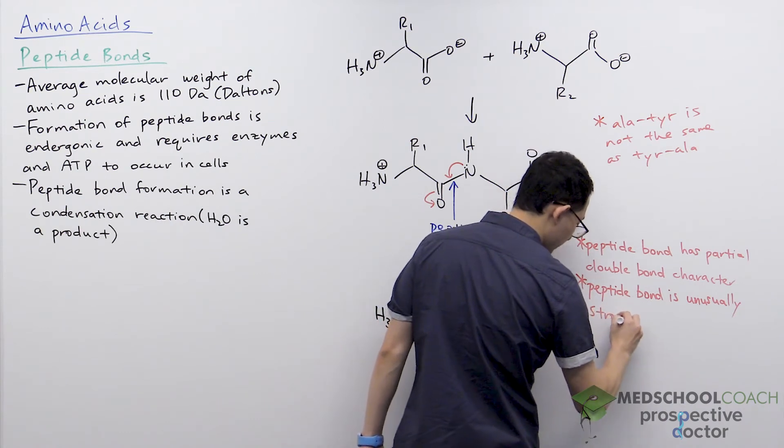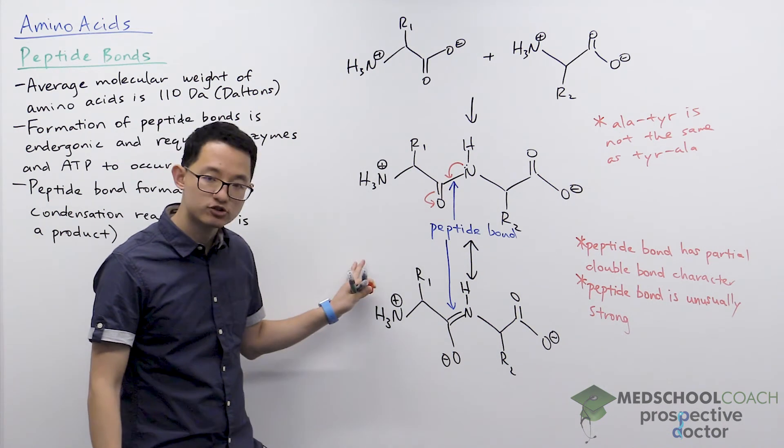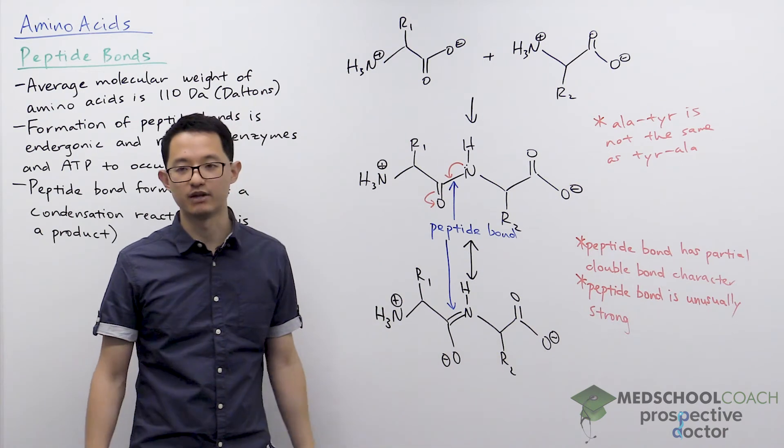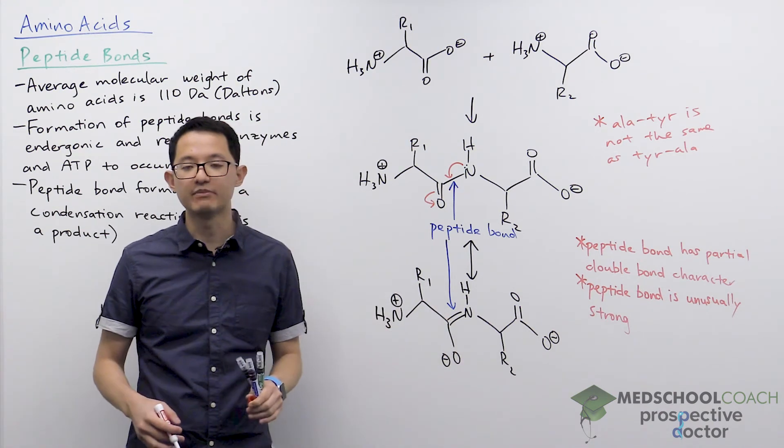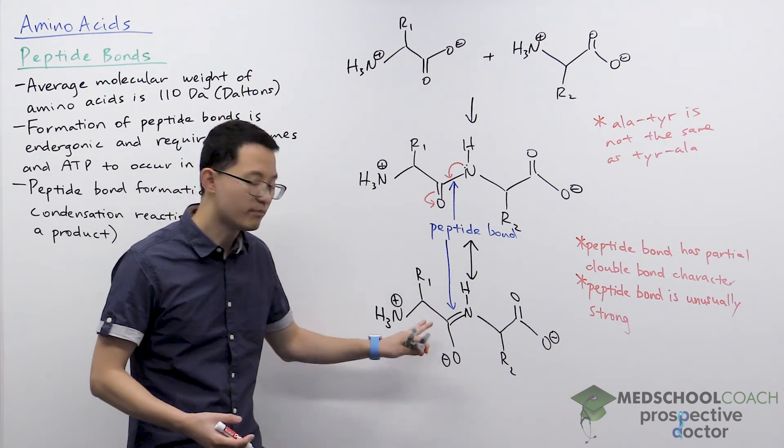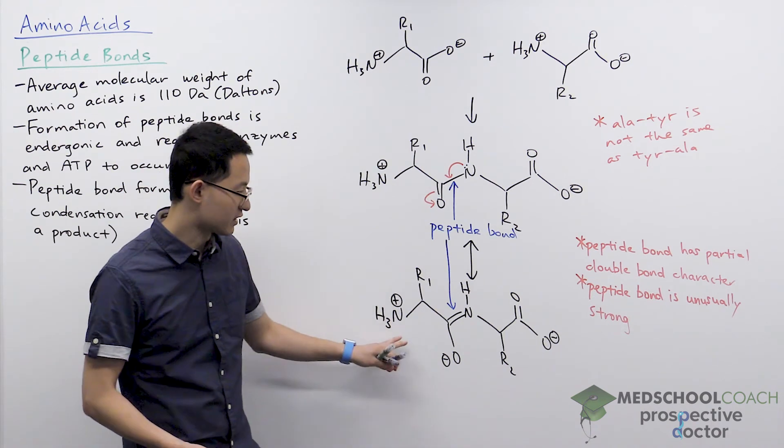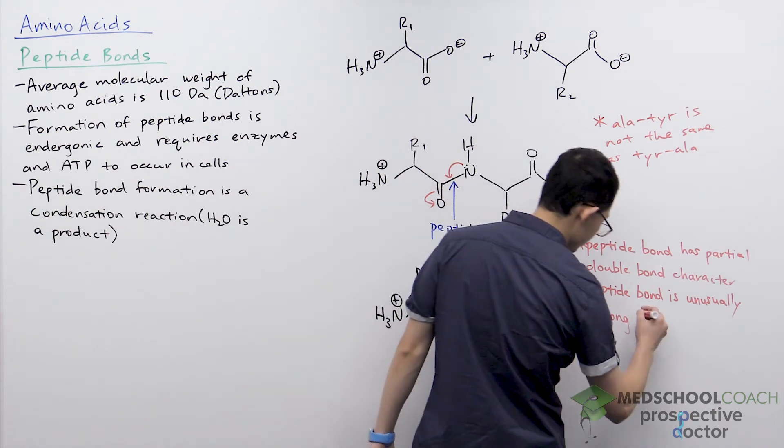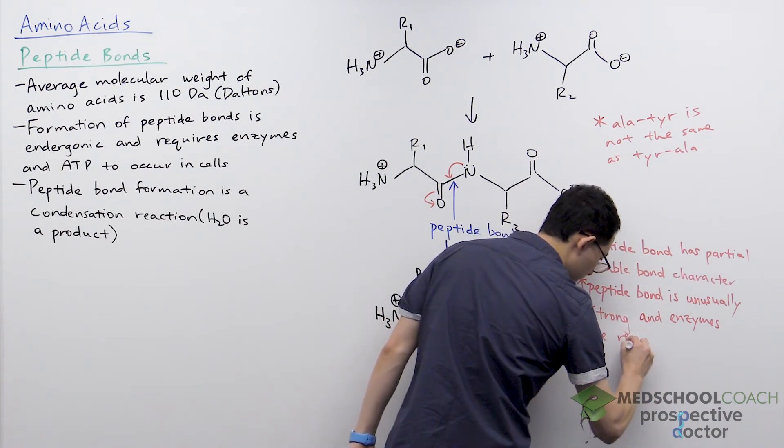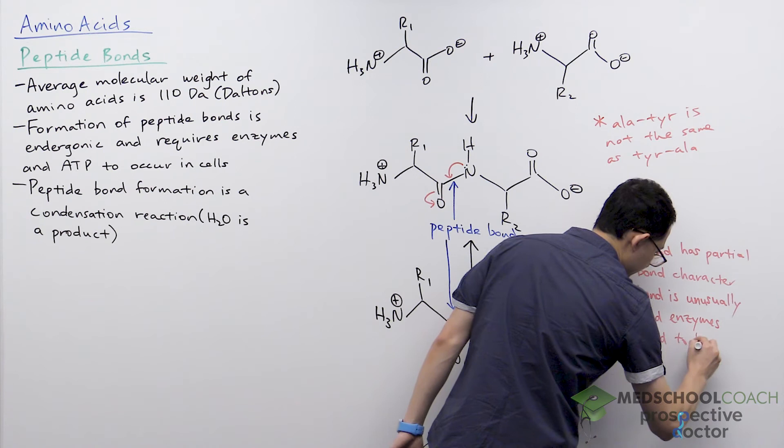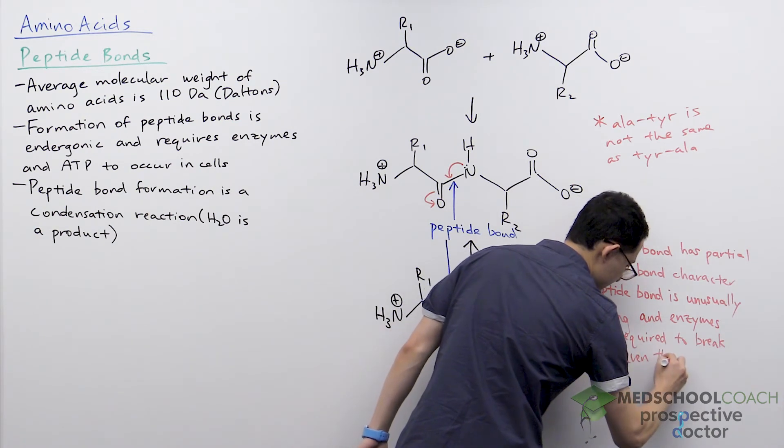Again, because of its partial double bond character, if you think about it, the formation of a peptide bond is endergonic - that means hydrolysis of the peptide bond, breaking this peptide bond, is exergonic. However, even though this process is exergonic, because this bond is very stable, it requires a very high amount of energy to break. So this has a high activation energy, so enzymes are still required for this process to occur. We say that the peptide bond is unusually strong and enzymes are required to break it, even though the process is exergonic.